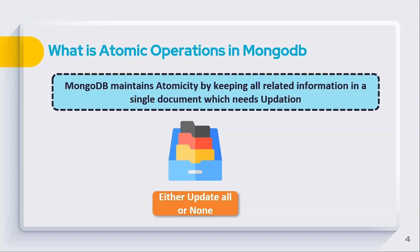For example, if I'm processing 150 documents but only 100 are updated and 50 are not — due to some external failure or system crash — that is not how we expect the database to work. We want to either update all 100 documents or not update any of them. This becomes crucial when working with large numbers of documents, like 20 million. The atomic operation keeps related information in a single embedded document that stores all your data.